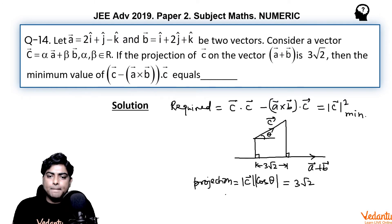So from here we can say that mod c squared would be 18 sec squared theta. Now we need to find the minimum value of it, so this is greater than or equal to 18. So 18 should be the final answer to this question.